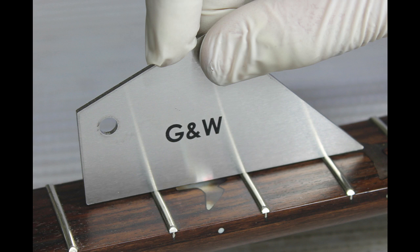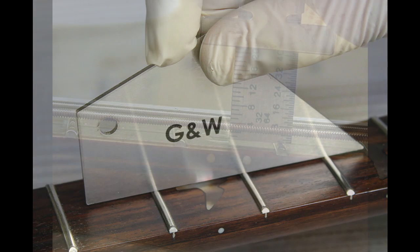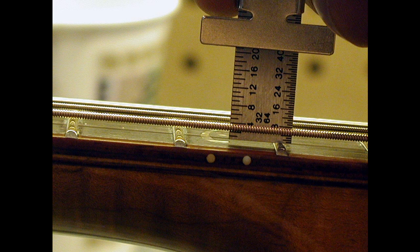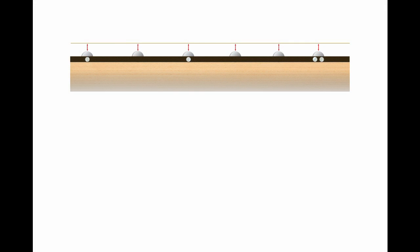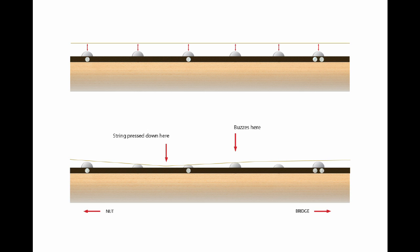We want the frets level because it enables us to have the lowest action possible without experiencing any fret buzz. Action is the height of the string above the fret, and fret buzz is an unwanted noise caused by the string touching a fret higher up the fingerboard when you're playing a note.